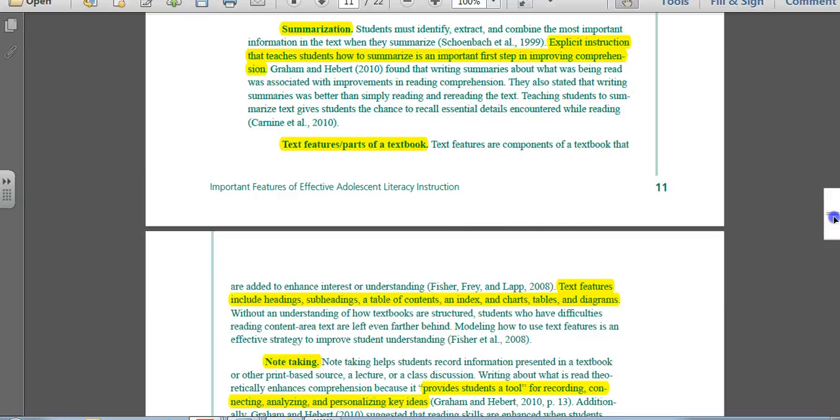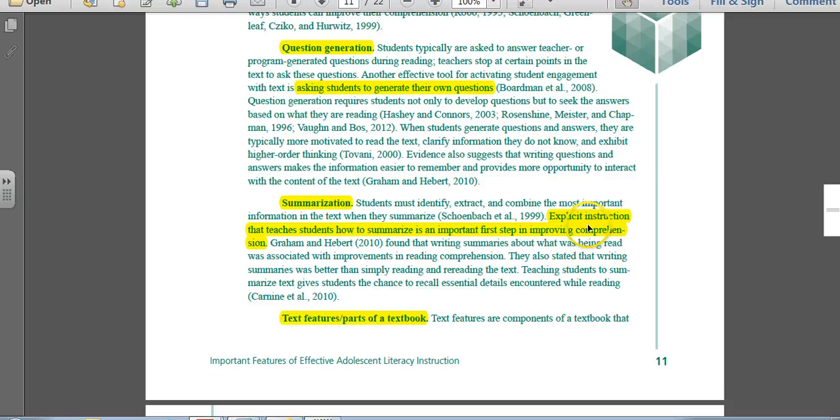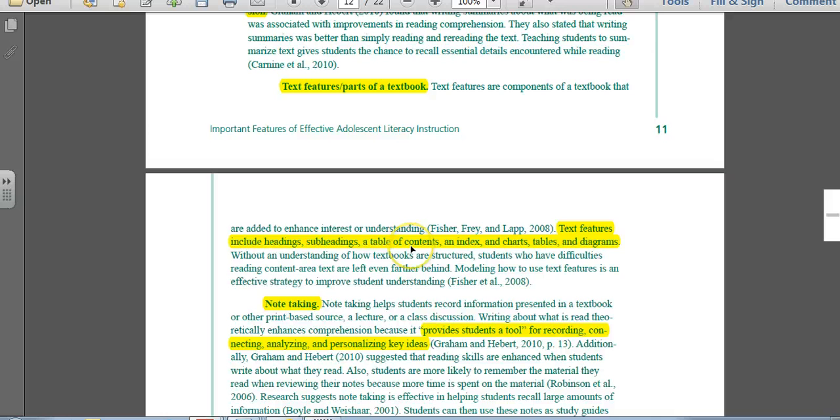Summarizing. Summarization is again an explicit thing that you want to teach. Children, or adolescents don't necessarily understand simply how to summarize. They really need to be able to have a clear understanding of how to tell a beginning, middle, and end of the story. And then text features, particularly of a non-fiction, perhaps headings, subheadings, table of contents, index, charts, tables, diagrams. All these pieces will give them clues to comprehension. Note-taking is another way to handle comprehension. It really provides students a tool for recording and connecting, analyzing, and personalizing the key ideas.